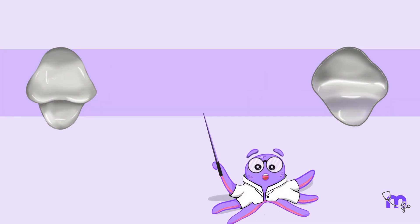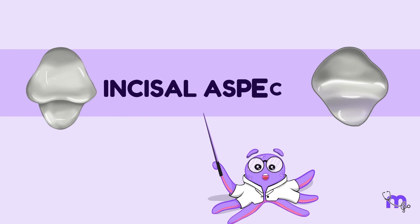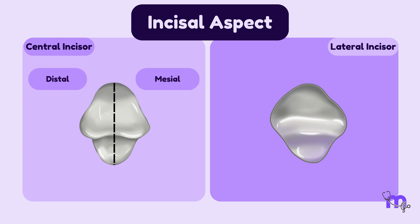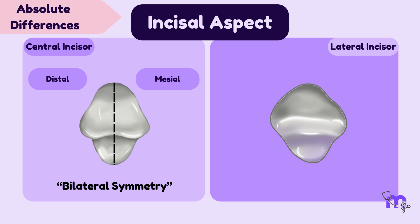Finally, let's examine the teeth from the incisal aspect. First, let's draw a line along the midline, dividing them into equal halves. In the case of the central incisor, both the mesial and distal halves appear identical, making it challenging to distinguish between the two. This feature, otherwise called bilateral symmetry, is an absolute difference observed in the mandibular central incisor.